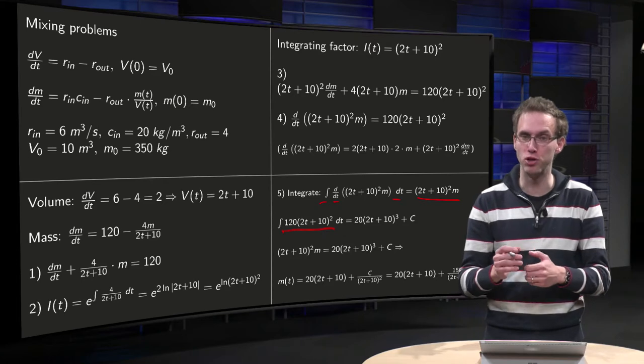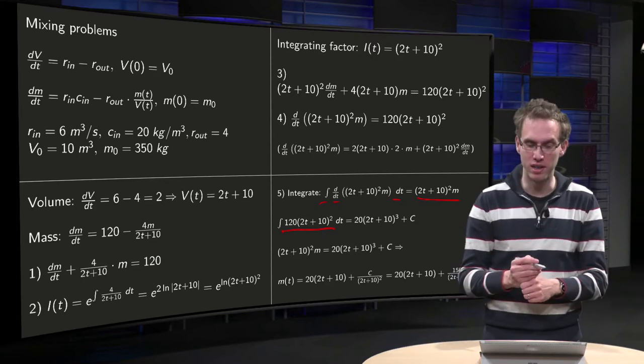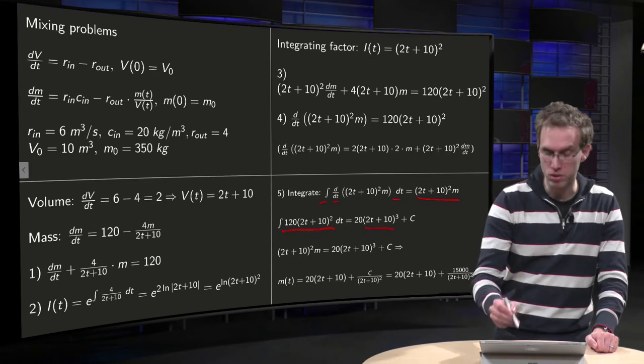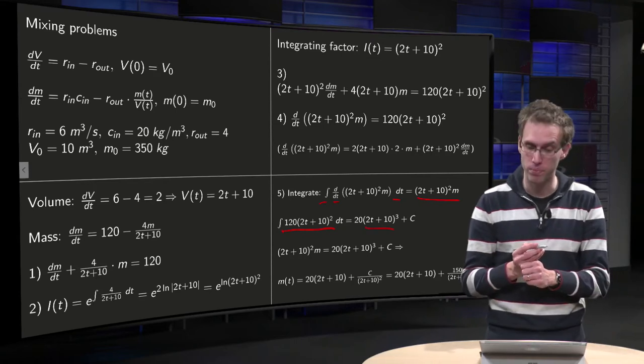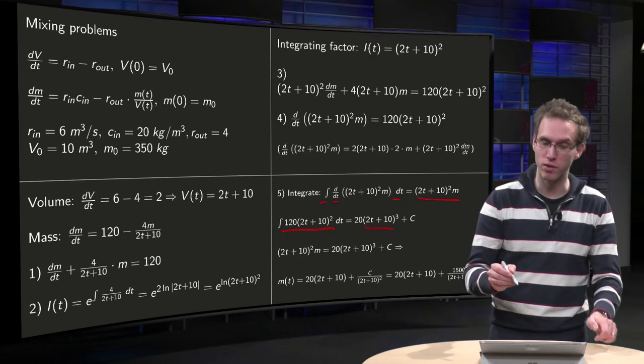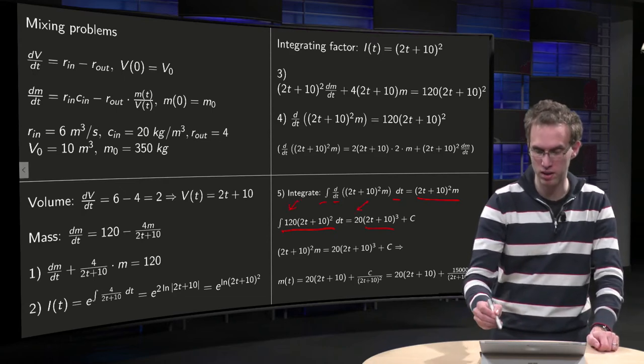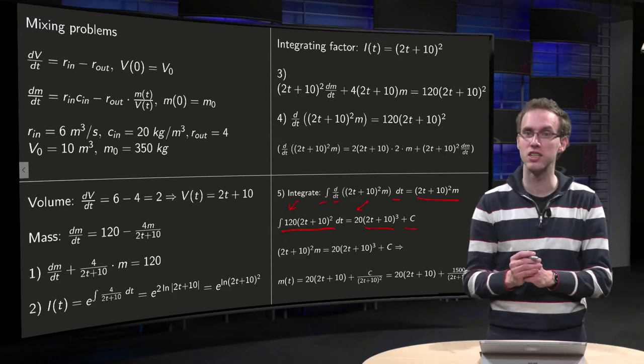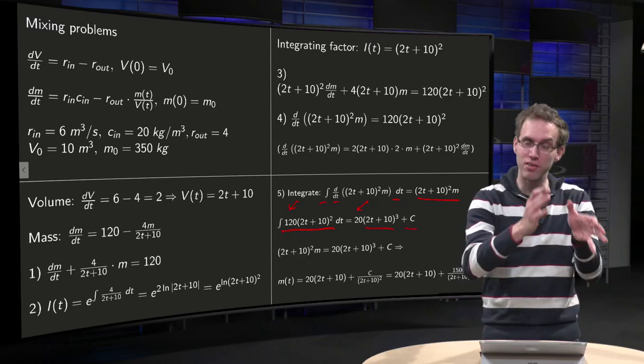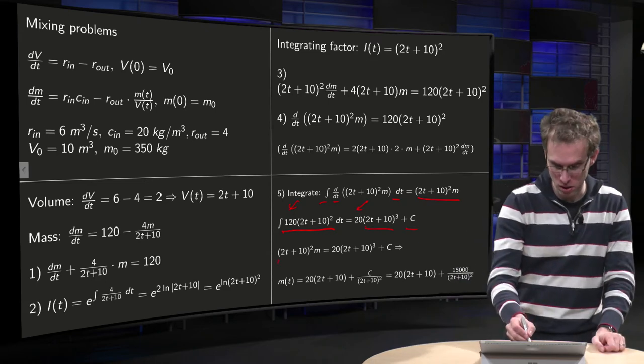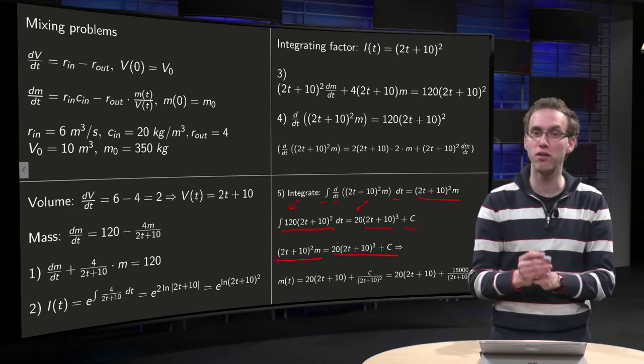And we also have to integrate the right hand side with respect to t. We can use a substitution rule for example, 2t plus 10 equals u. Or you see immediately that this yields one third times (2t + 10) cubed times one half. So 1 over 6 times the 120 we had here, so 20, integration constant c. So we integrated the left hand side. We integrated the right hand side. Those two have to be equal. So left hand side equals right hand side.